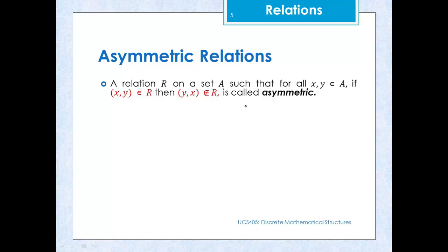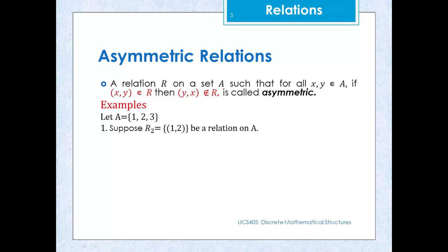Suppose we have a relation R2 on a given set A, and R2 contains the ordered pair (1,2). Is R2 asymmetric? Yes, because we have an ordered pair (x,y) but we do not have an ordered pair of type (y,x). So it is asymmetric.